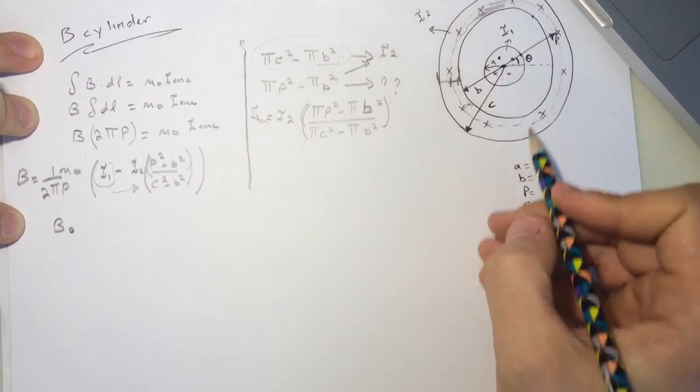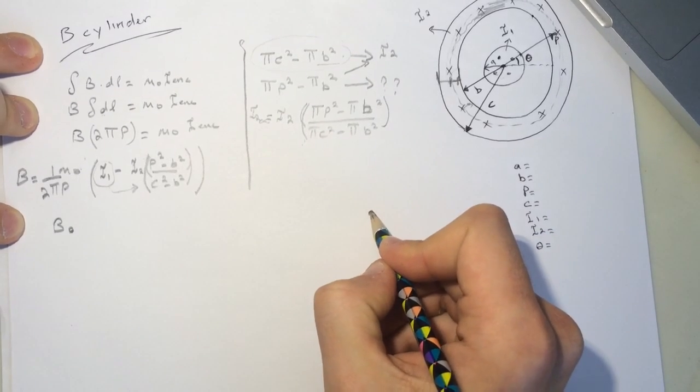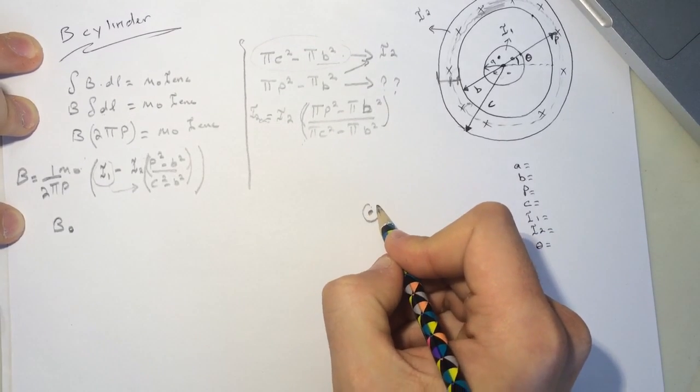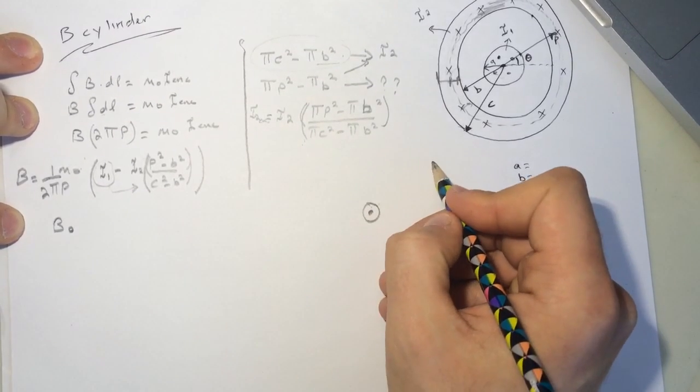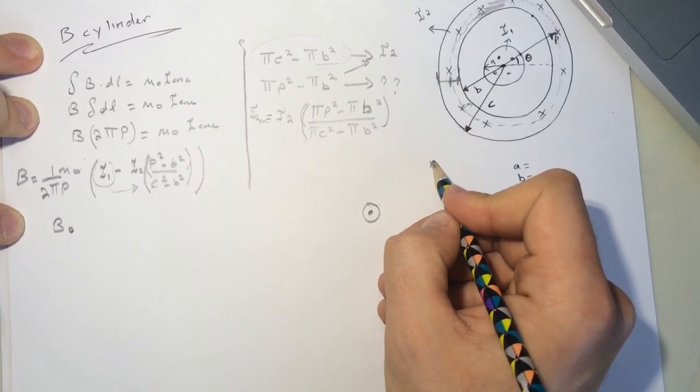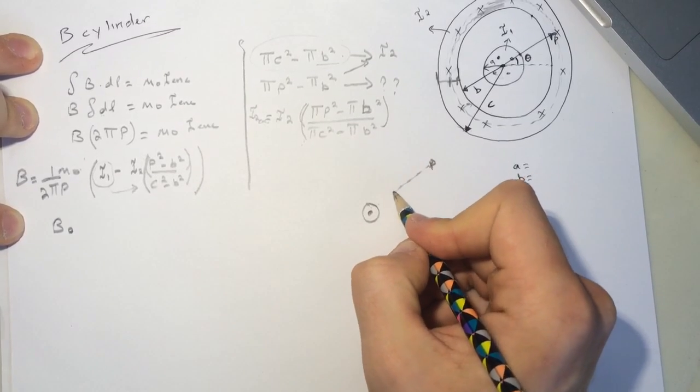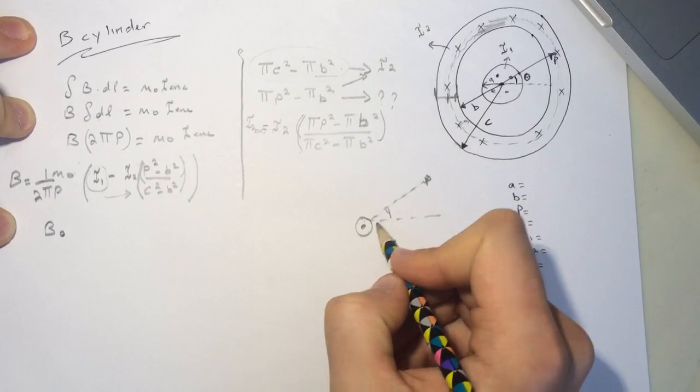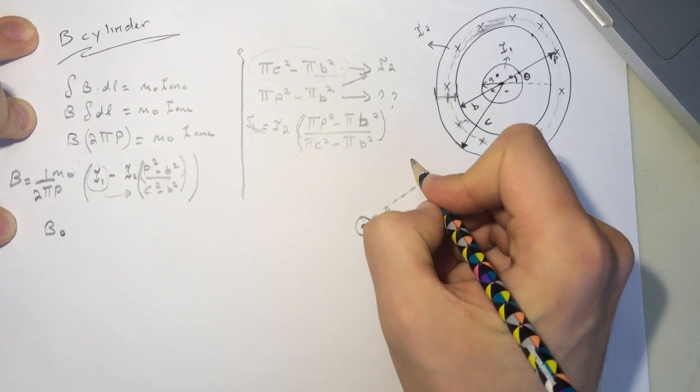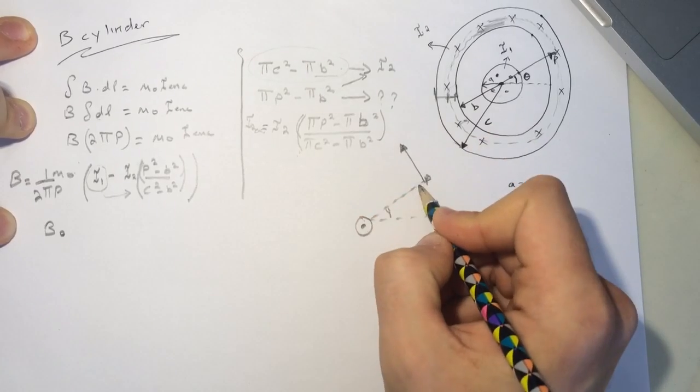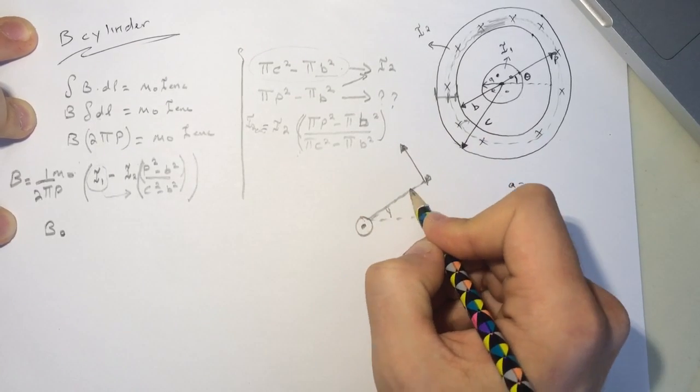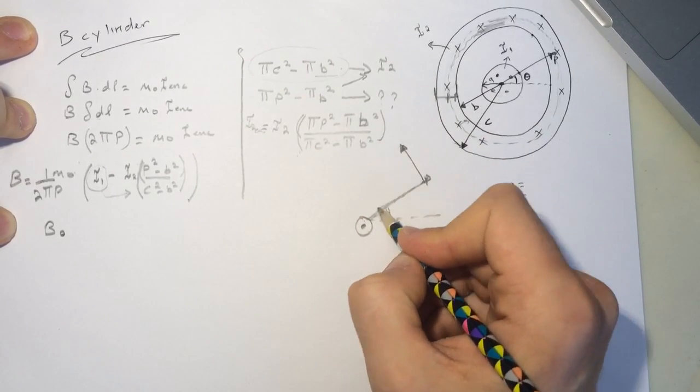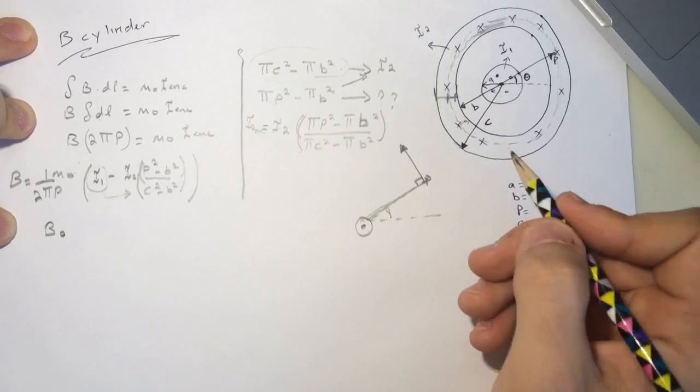So this guy, if we draw it here again, this is the point p, and we have this angle here. So this will make a magnetic field that's pointing perpendicular to the r, or to the p here, like to this here. This is going to be perpendicular to this.